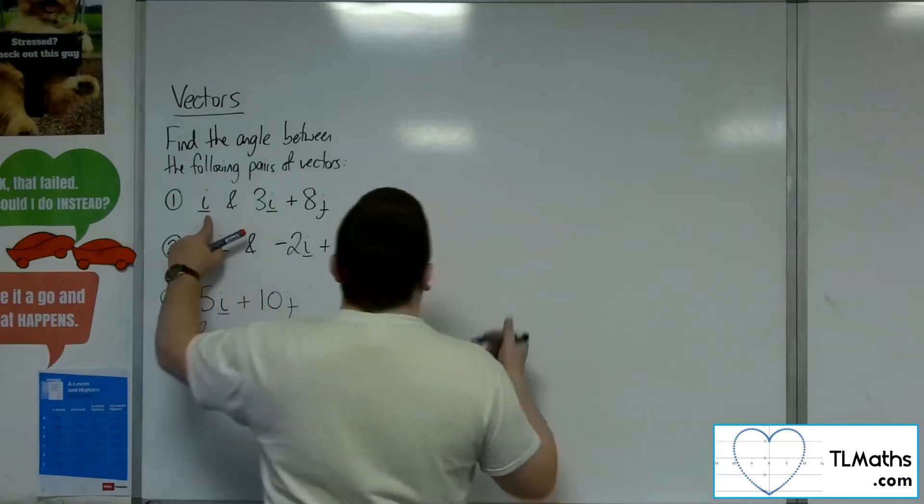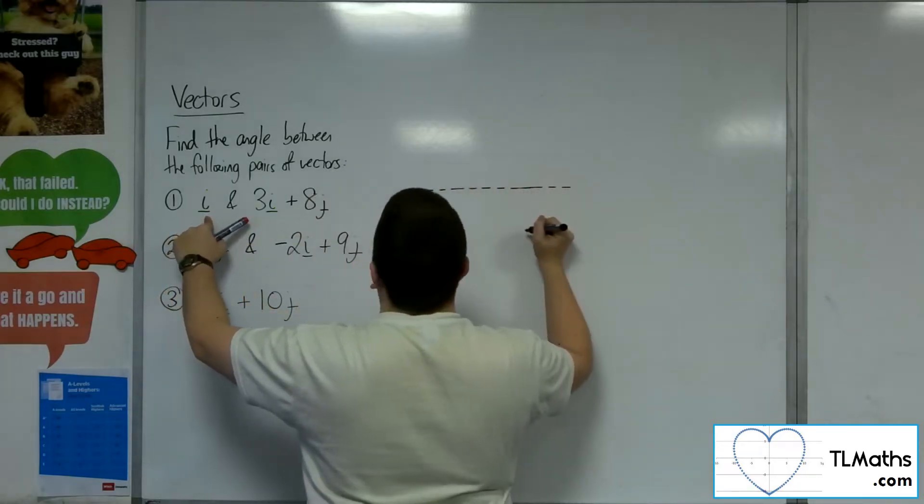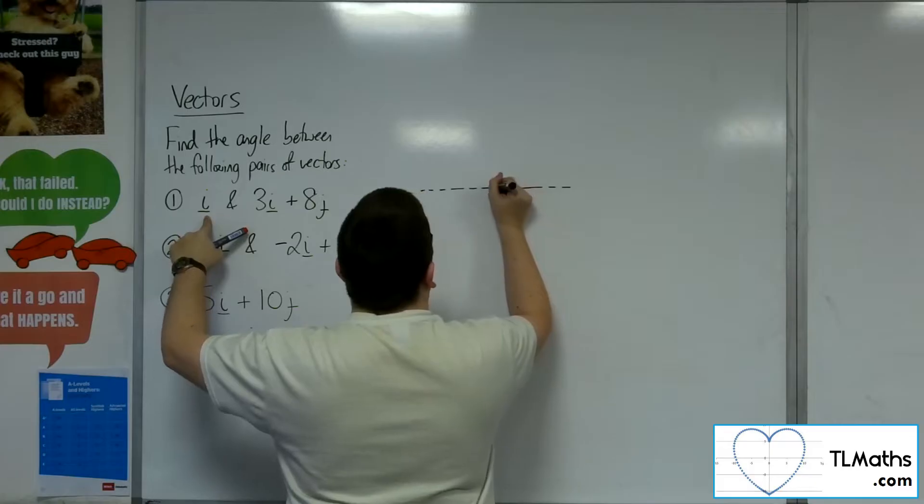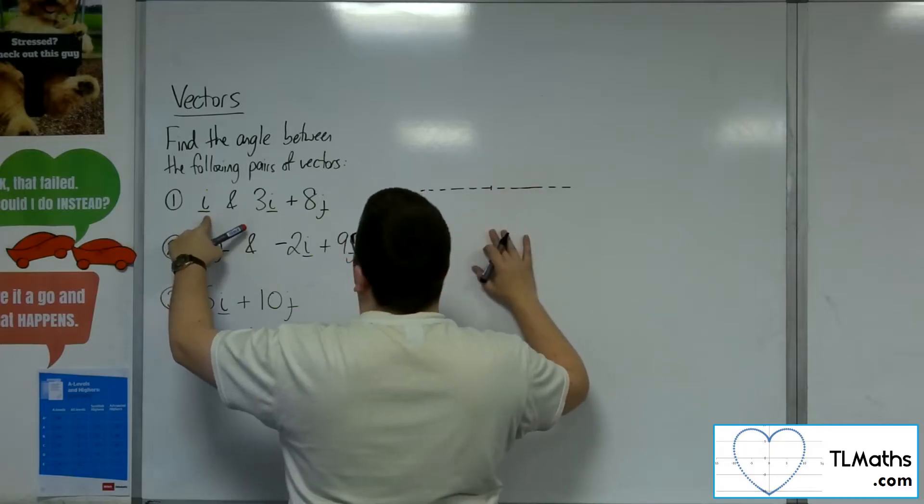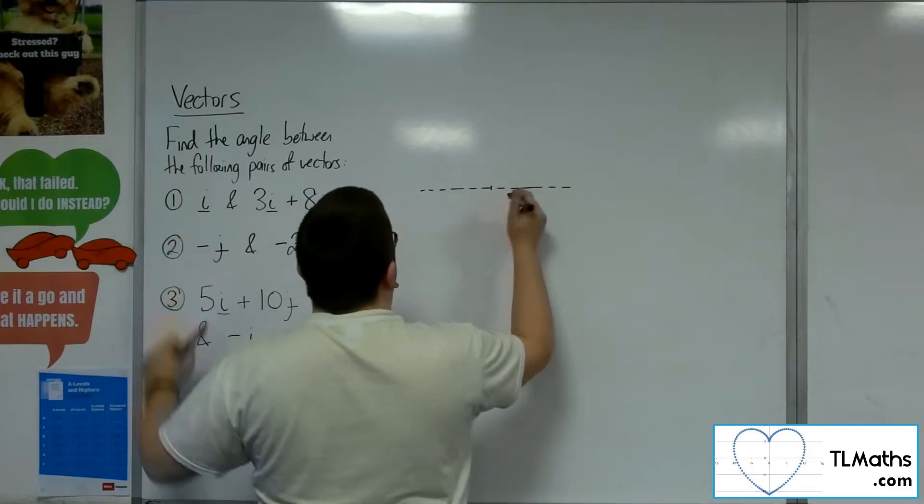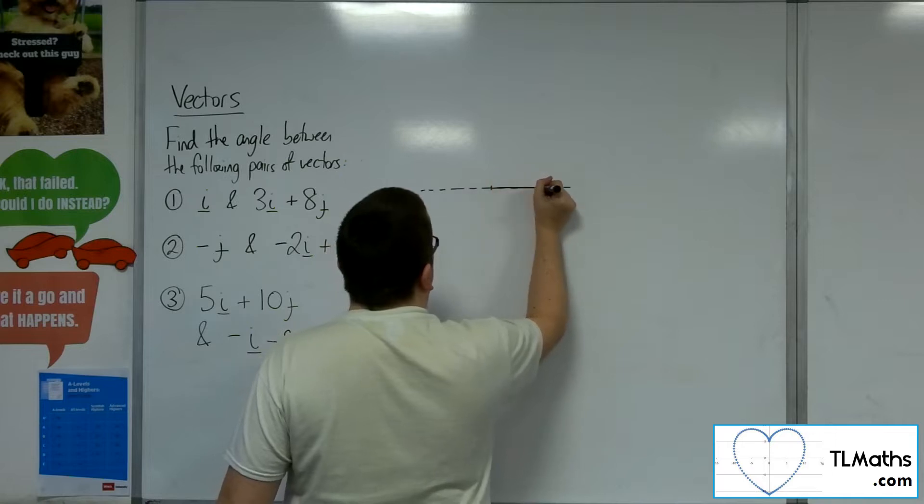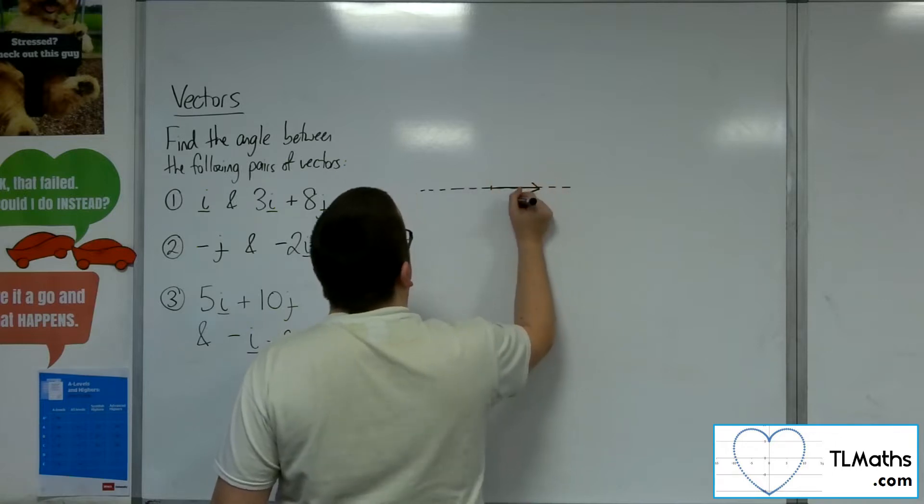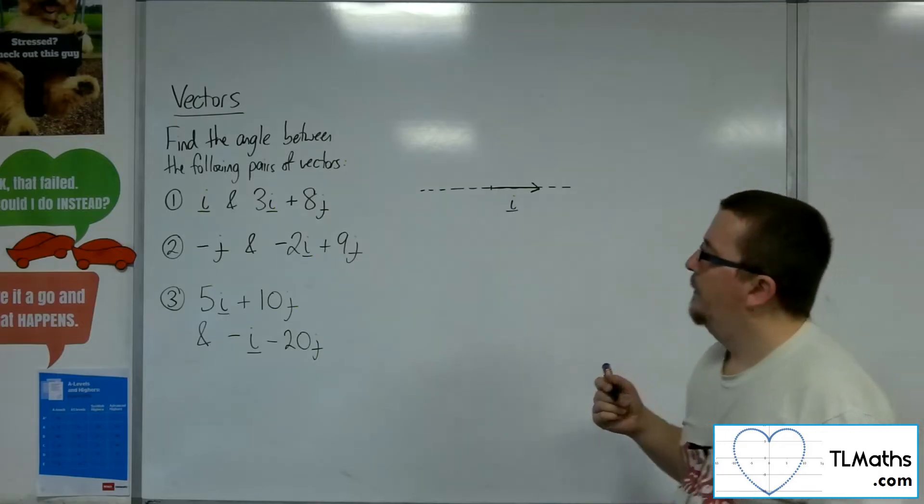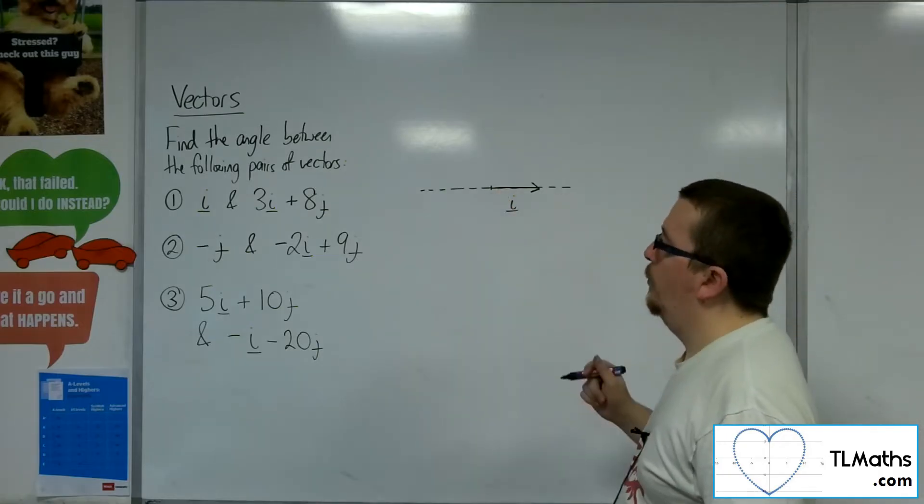We've got i and 3i plus 8j. So if I draw in an x-axis just to start off with, so an idea of direction, something to work with, there can be the origin. So i will be this vector here, horizontal and just going of unit length 1.